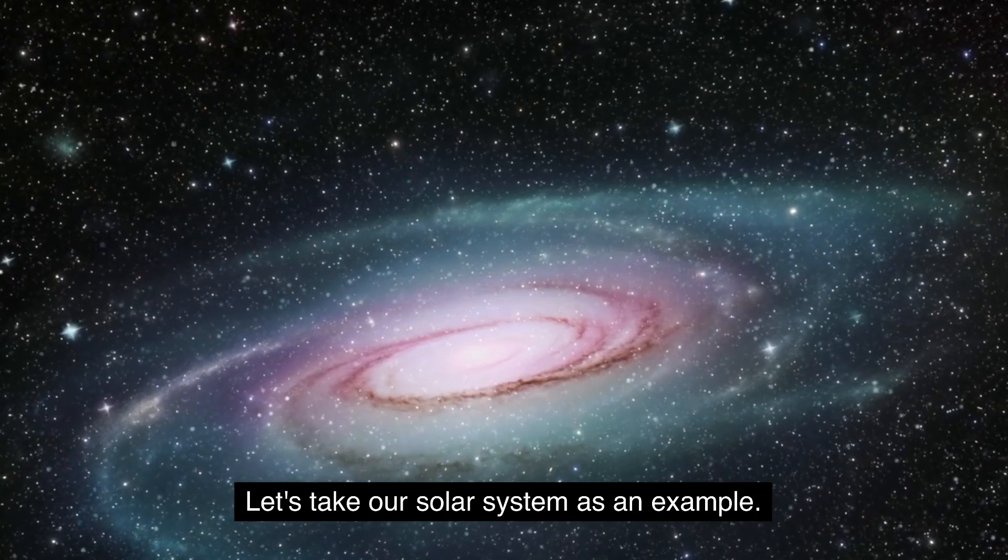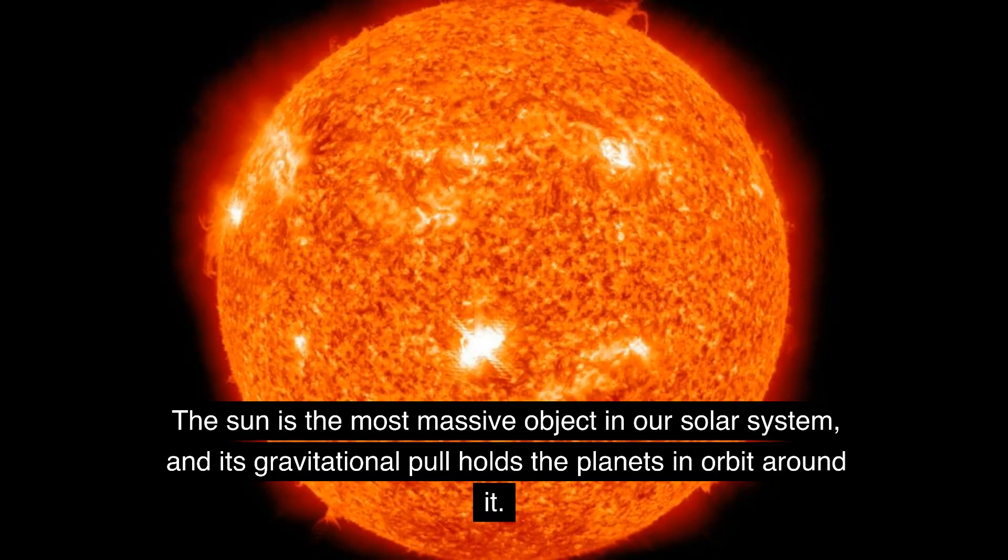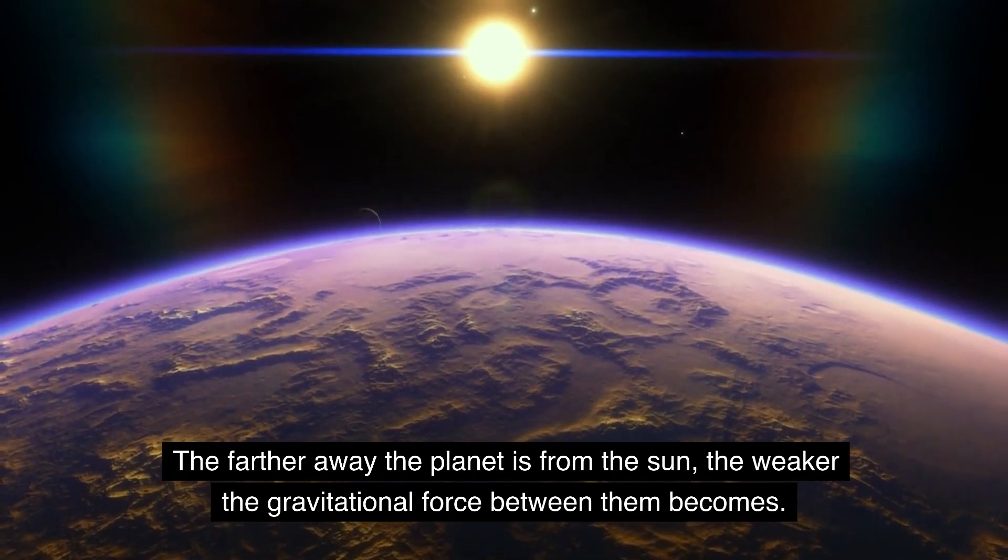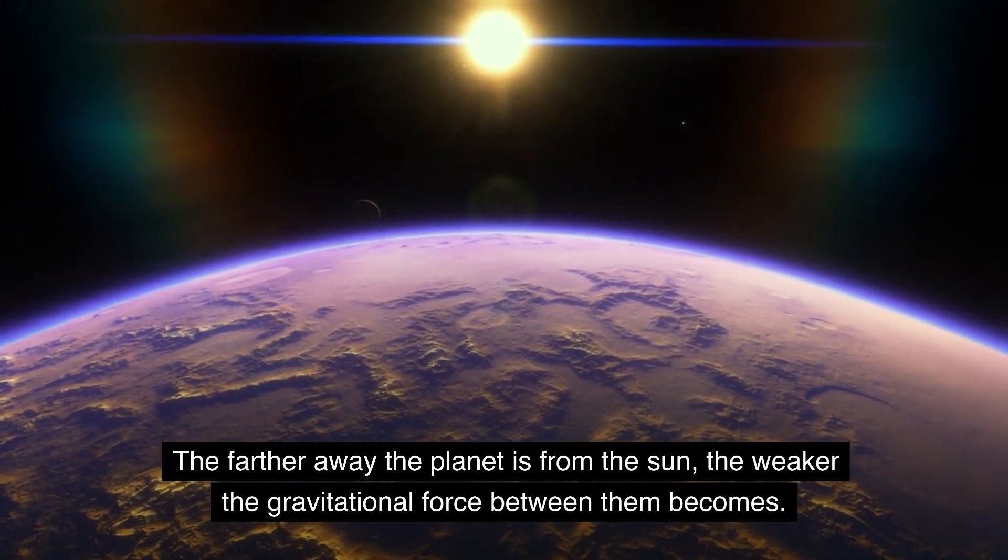Let's take our solar system as an example. The sun is the most massive object in our solar system, and its gravitational pull holds the planets in orbit around it. The farther away the planet is from the sun, the weaker the gravitational force between them becomes.